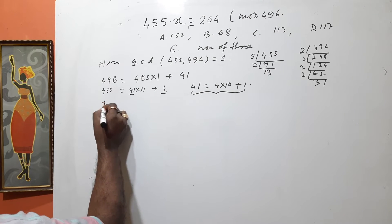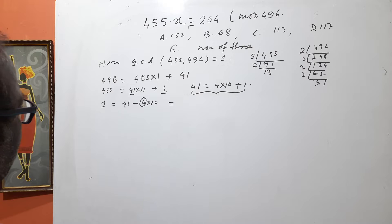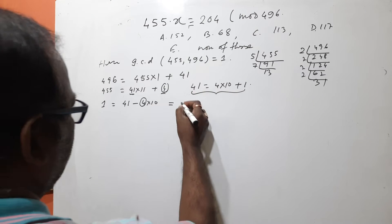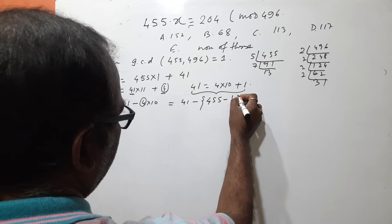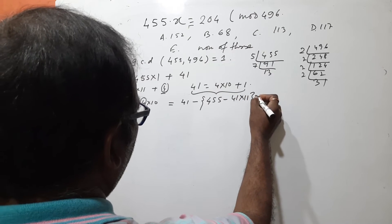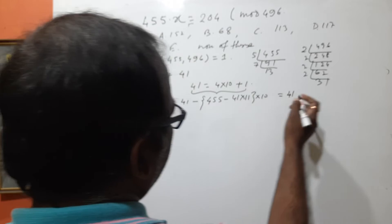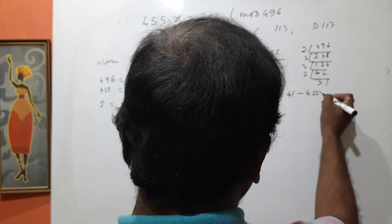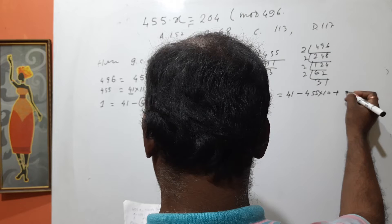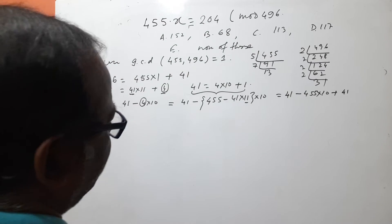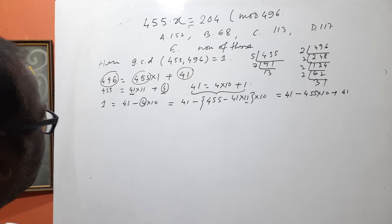From this relation we can express: 1 = 41 − 4·10. We need to express 4 from the previous expression: 4 = 455 − 41·11. Substituting back and multiplying by 10, we get 455·10 and terms involving 41. Combining, we find 1 = 101·41 − 455·10. This is the main important point.